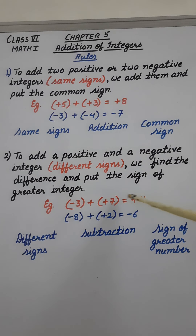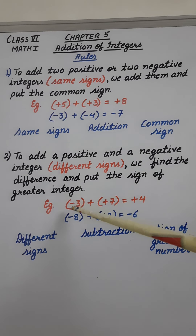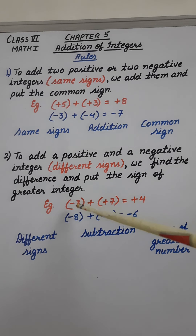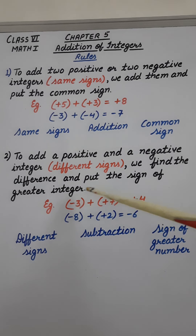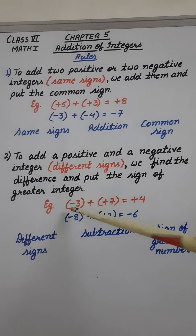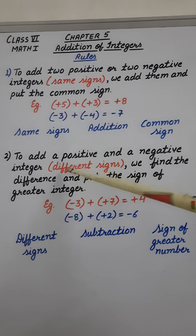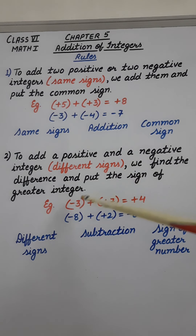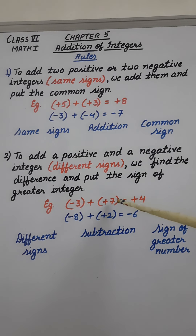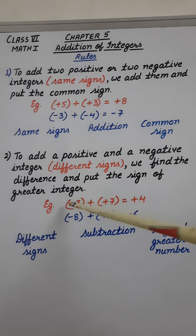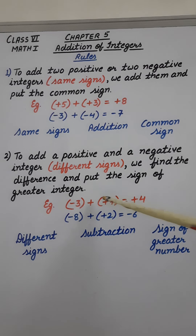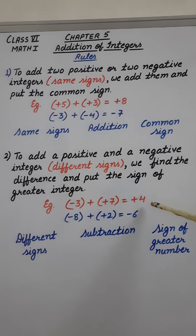Let's see the example. There are two integers: one is minus 3 and one is plus 7. We have to find the sum of these two. Now they have different signs — it is minus 3 and it is plus 7. So what we have to do? We have to find the difference of these. So 7 minus 3 is 4.